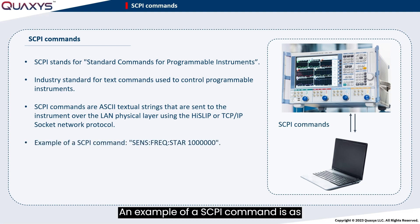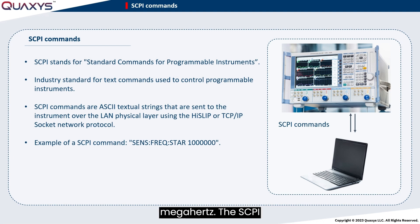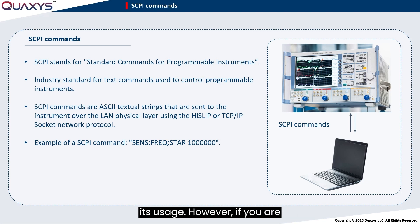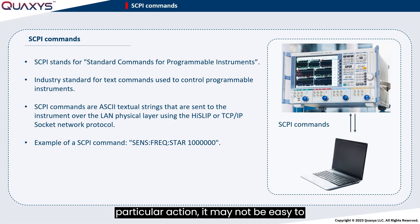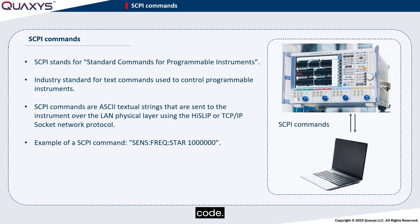An example of a SCPI command is as follows. This command instructs the VNA to set the start frequency of the measurement to 1 MHz. The SCPI command typically provides context for its usage. However, if you are unfamiliar with the command for a particular action, it may not be easy to generate it accurately. This is where the programming manual becomes especially valuable, as it contains the necessary SCPI commands to help you build your code.